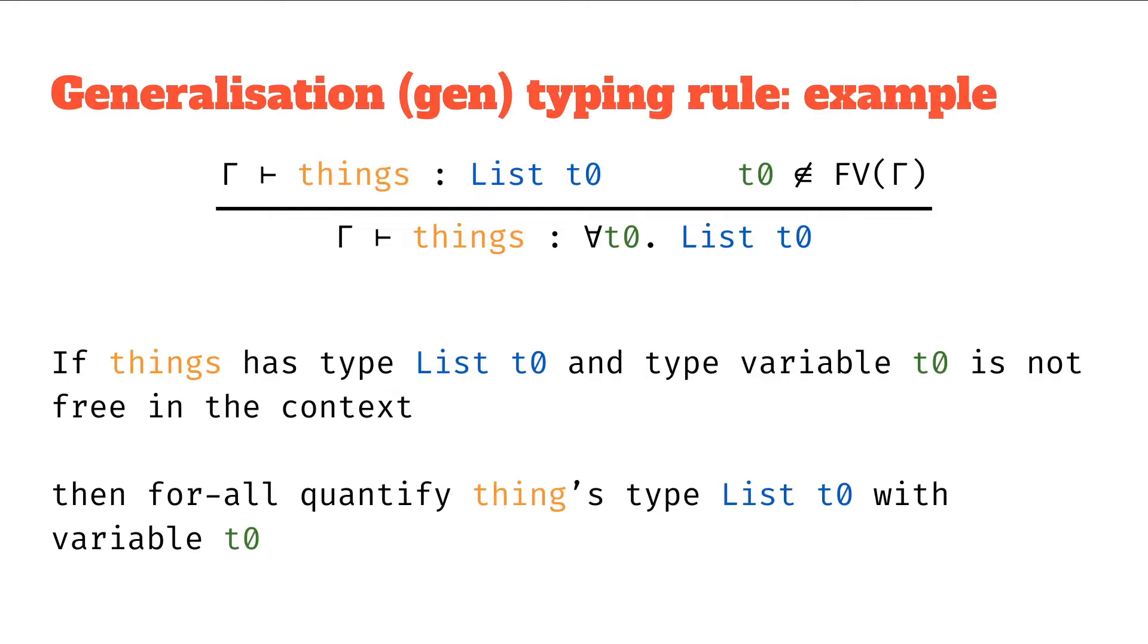They actually have to be not in the free variables context, which means basically they're only in this one specific place that we've seen so far. And that way we can have confidence to say, well, this can be any type whatsoever, because I haven't seen it anywhere else, and therefore it doesn't have any other constraints on this type. So I can declare that it could be any type. So I can say for-all this type.